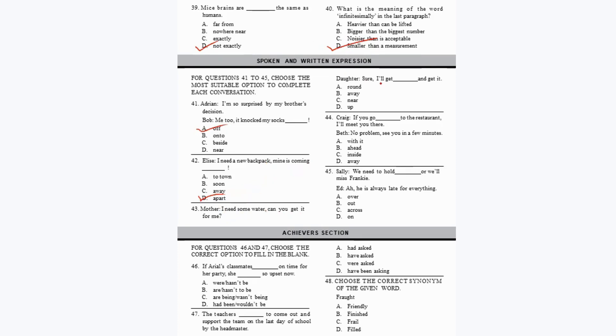Question 42: 'Mine is coming dash' — 'coming apart,' meaning it is in bad condition. Question 43: 'Sure, I'll get up and get it.' Question 44: 'If you go dash to the restaurant I'll meet you there' — 'go ahead' to the restaurant — option B. Question 45: 'We need to hold dash or we'll miss Frankie' — 'hold on' means to wait — option D.